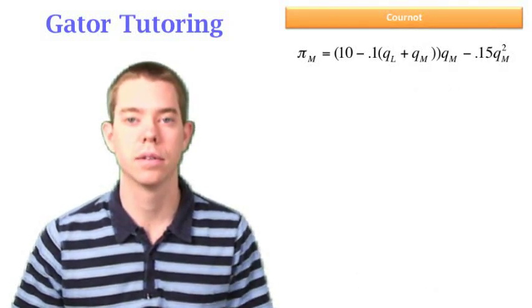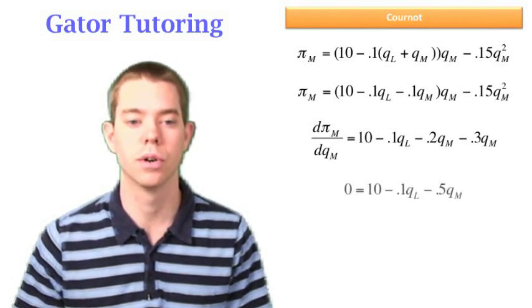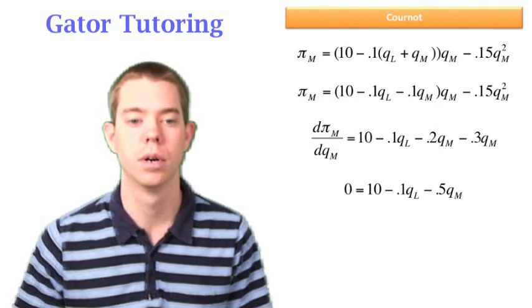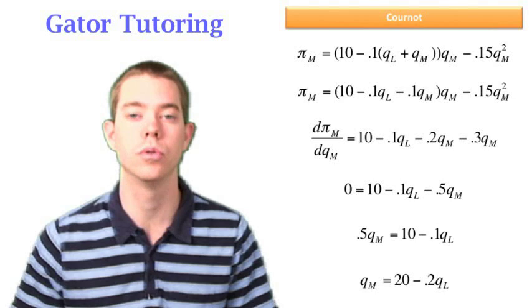So now we can do the same thing for Matt. We do some algebra. We're going to take the derivative, set it equal to zero again. Now with respect to QM, we go through and we solve that QM is equal to 20 minus 0.2 QL.